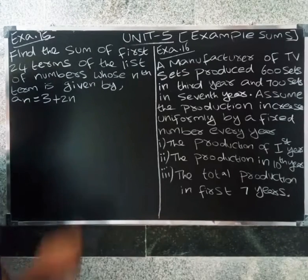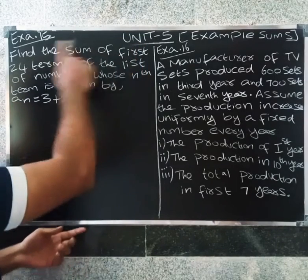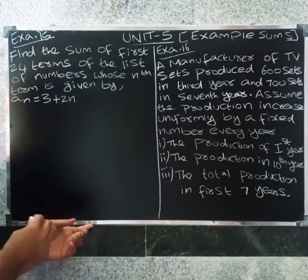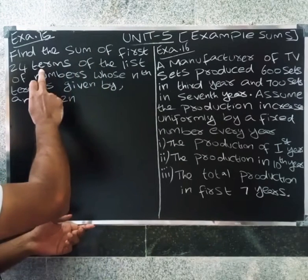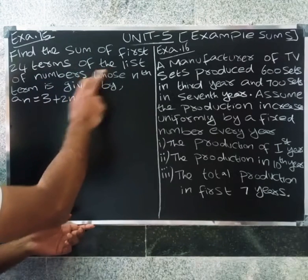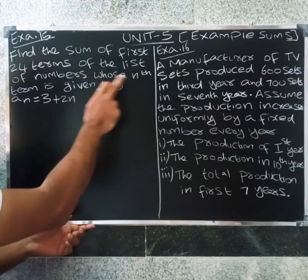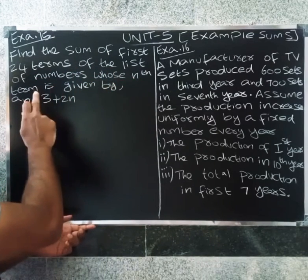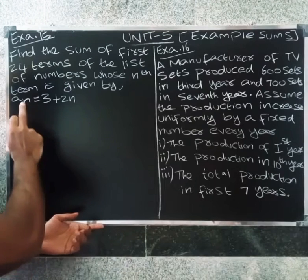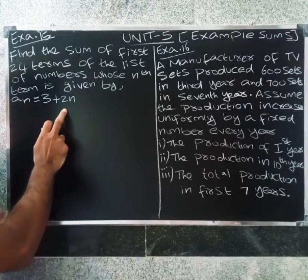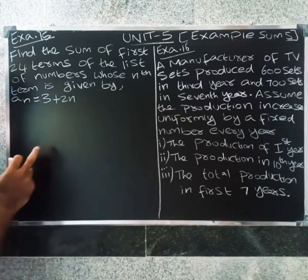Welcome friends. In our unit file, examine 15. Find the sum of first 24 terms of the list of the given numbers whose nth term is given by n.